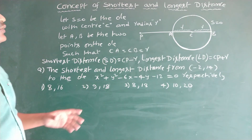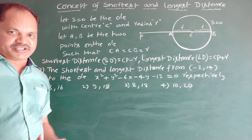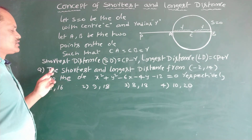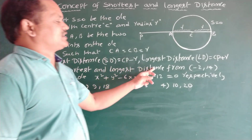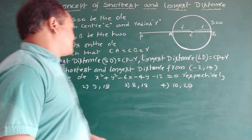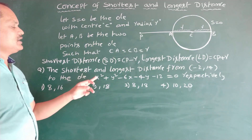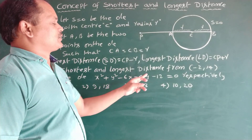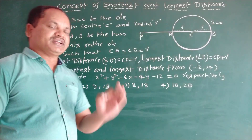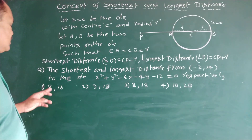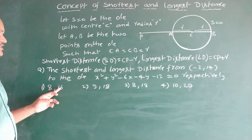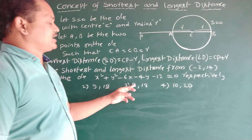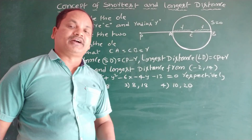Now we have to do one question based on this concept. The question is: find the shortest and longest distance from the point (-2, 14) to the circle x² + y² - 6x - 4y - 12 = 0. The options are: (1) 8, 16; (2) 9, 18; (3) 8, 18; (4) 10, 20.